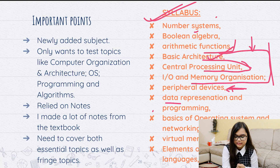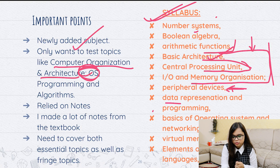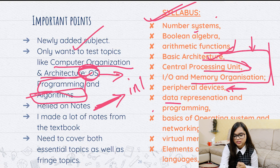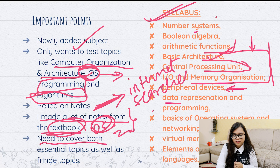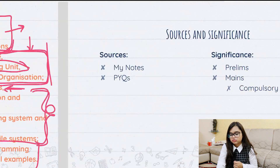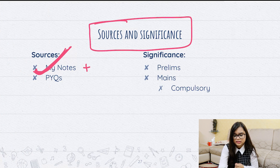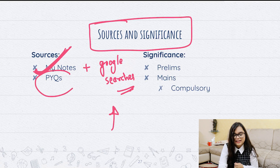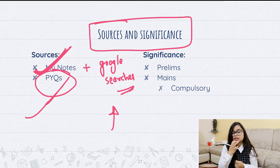Key important points for Computer Fundamentals: it is a newly added subject that tests topics like computer organization and architecture, operating systems, scheduling, programming, and algorithms — which are very important. I completely relied on my notes and internet searches for things I didn't understand. You need to cover both essential and fringe topics. For sources, I used my notes plus Google searches, and of course previous year questions to understand what topics are truly being tested.